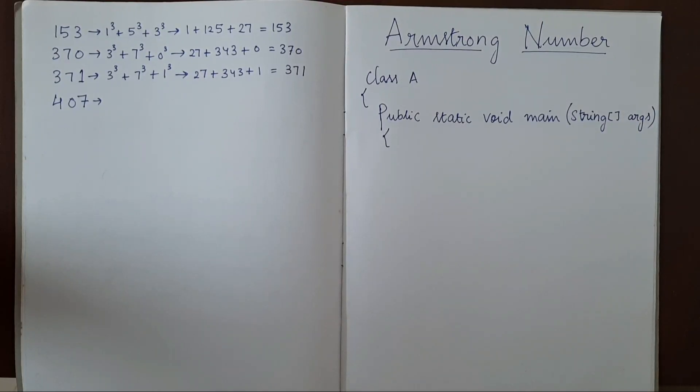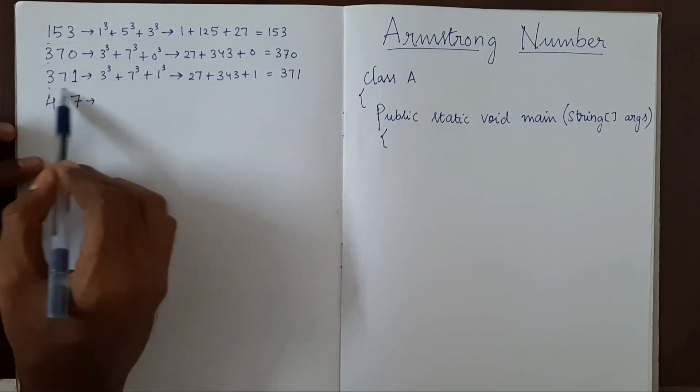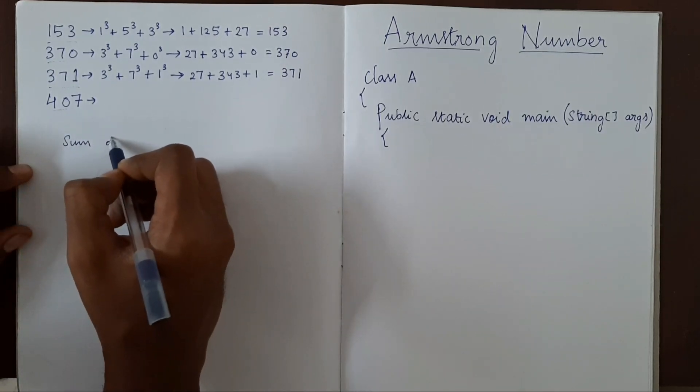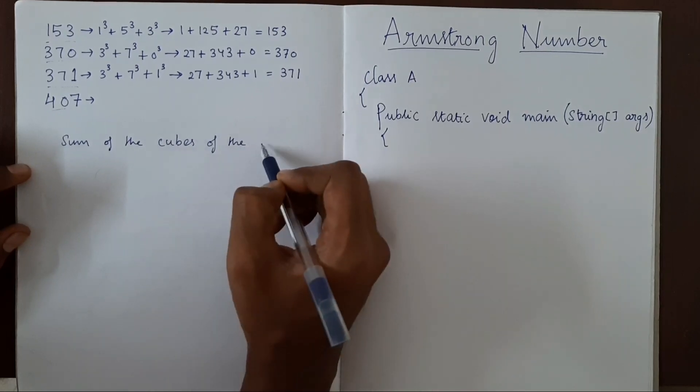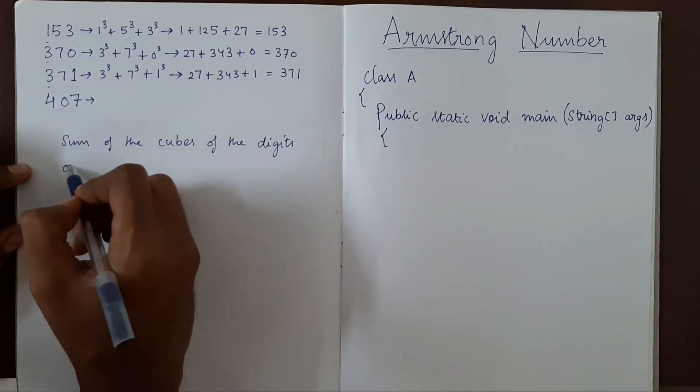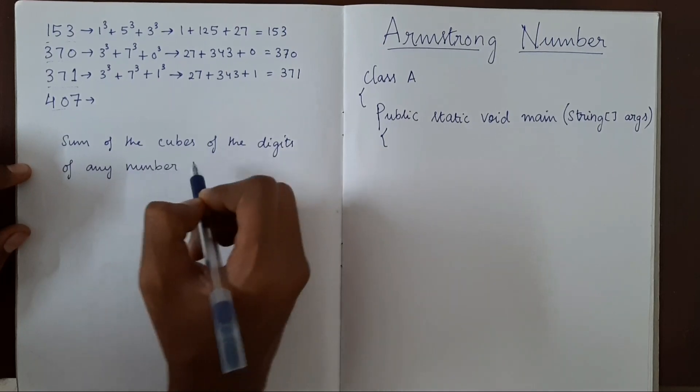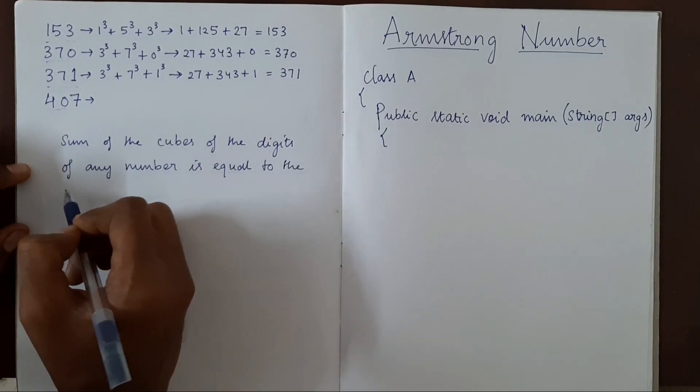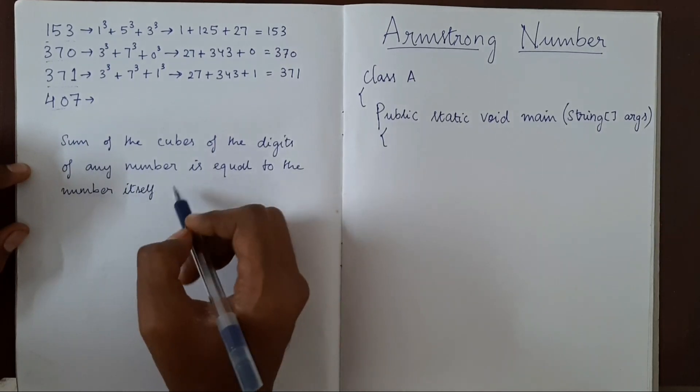Hello everyone. Today we will write a program to check if a given number is Armstrong number. So let's see what an Armstrong number is. These numbers here are all Armstrong numbers. If the sum of the cubes of the digits of any number is equal to the number itself, then it is Armstrong.